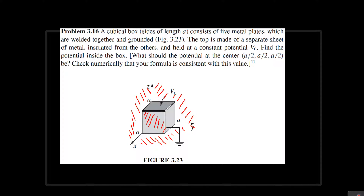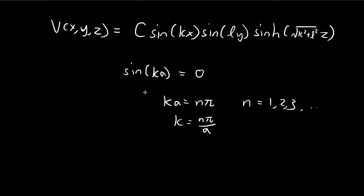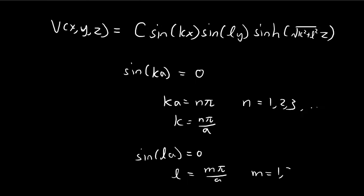Using a similar argument for the side where y equals a, we find sin(la) equals zero, giving l equals mπ/a, where m is another integer dummy variable. So we've now found two more constants, k and l, in terms of the integers n and m.